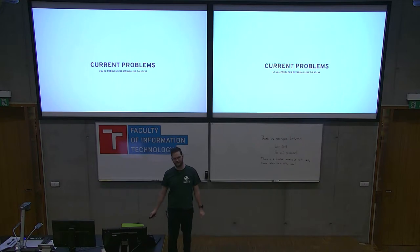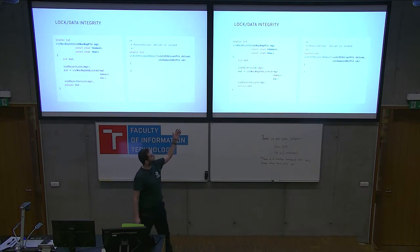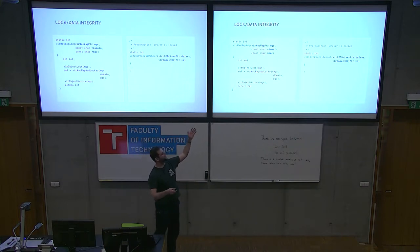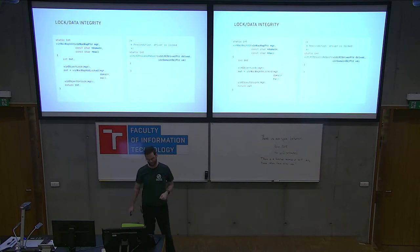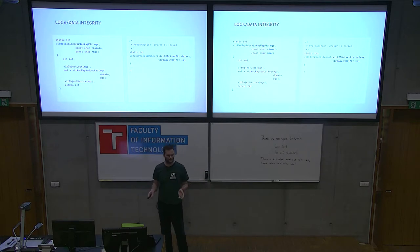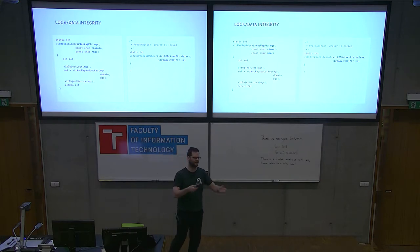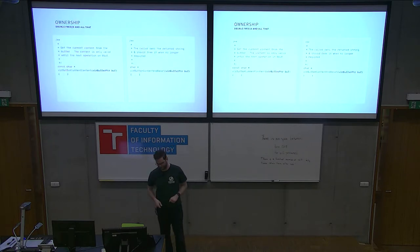Some of the problems we face are things like data integrity. Here you have a function, vir_macmap_add, that works on an object. You lock the object and you call the same function with 'locked' in the name. You kind of know which function accepts the locked object and which accepts the unlocked one — until you get to the other part where it says there's a precondition: it should be locked. So these things can occur, and while Rust will not help you with everything, every little thing helps.